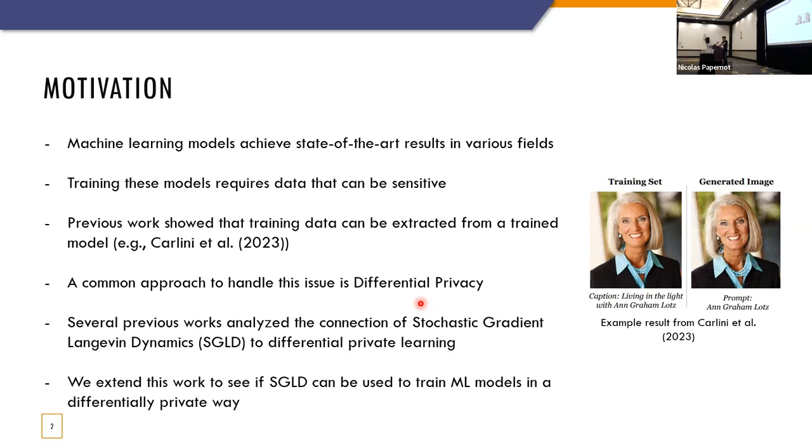And this can pose a problem because previous work showed that training data can be extracted from a trained model. For example, the work of Carlini, who showed that they can extract training images from a trained diffusion model here. So one common approach to handle this problem is to use differential privacy.